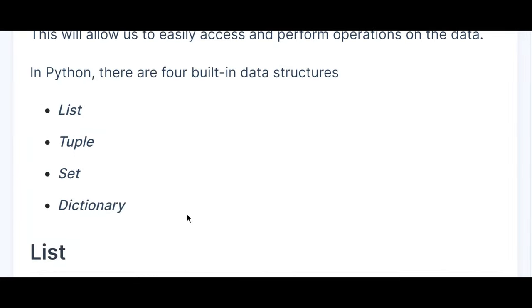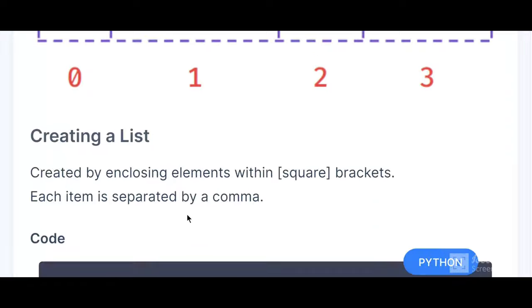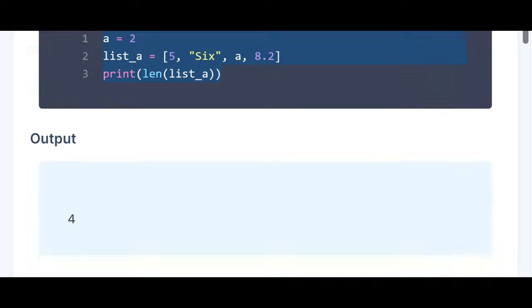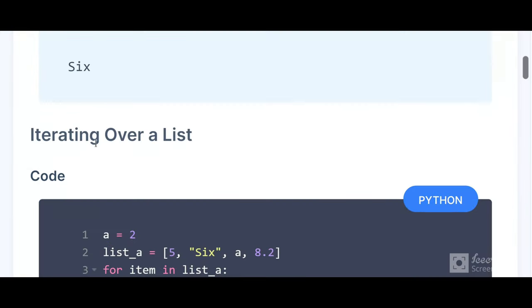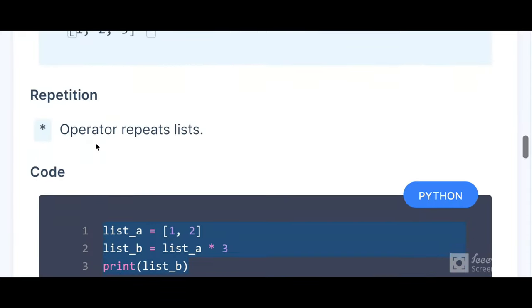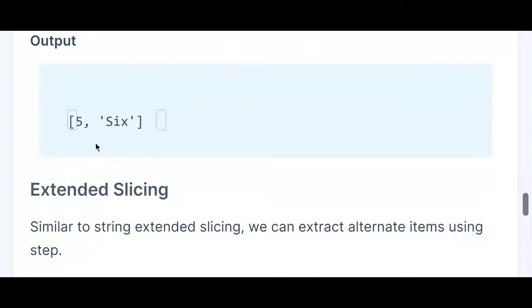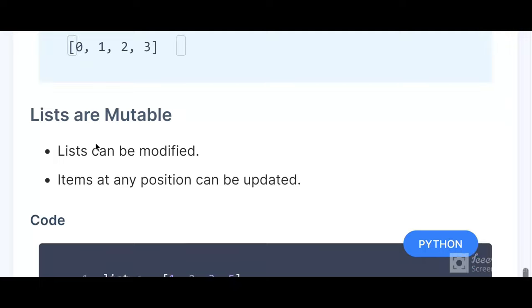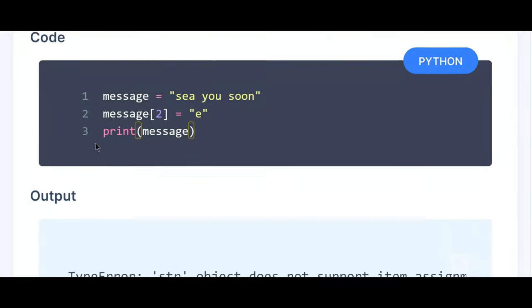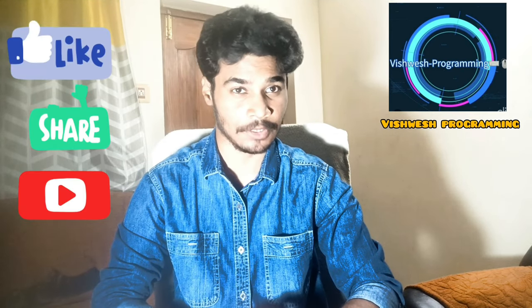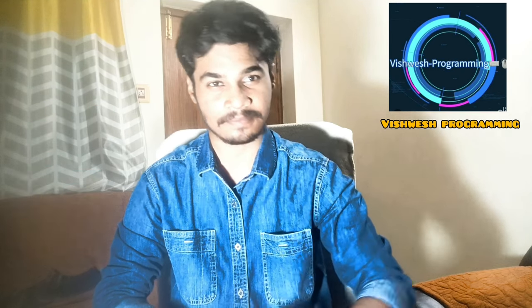So in this video we have learned many topics: data structures, the four built-in types (list, tuple, set, dictionary), creating a list, creating a list of lists, length of the list, accessing list items, iterating over a list, list concatenation, adding items to a list, repetition operator, list slicing, extended slicing, converting to list, and mutable lists vs immutable strings. Thank you so much for watching the video until the end. Please like, share, and subscribe to my YouTube channel, Visual Programming!